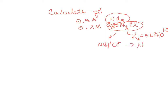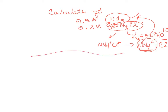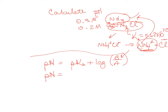NH4 plus is the conjugate acid of NH3. Anytime you have a buffer, you need to know the Henderson-Hasselbalch equation. Remember that the concentration of the base goes in the numerator — very common mistake. So let's plug in everything we know: pKa is minus log of Ka, which was given.